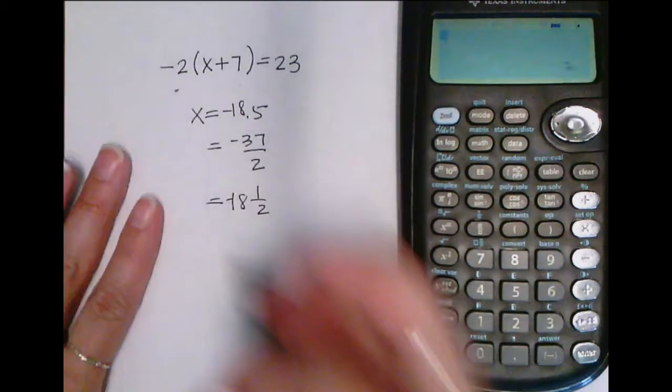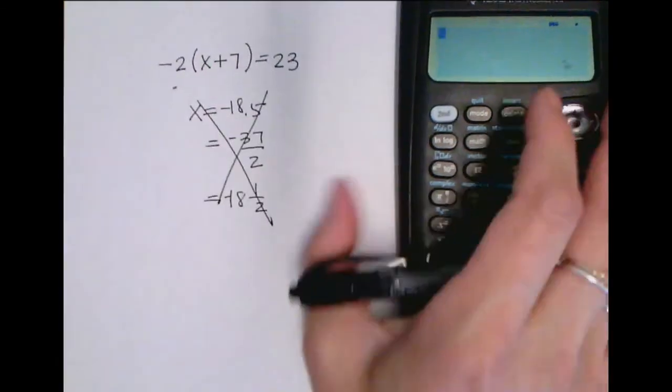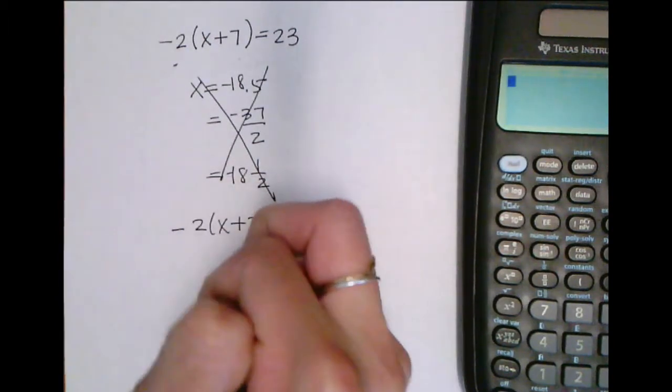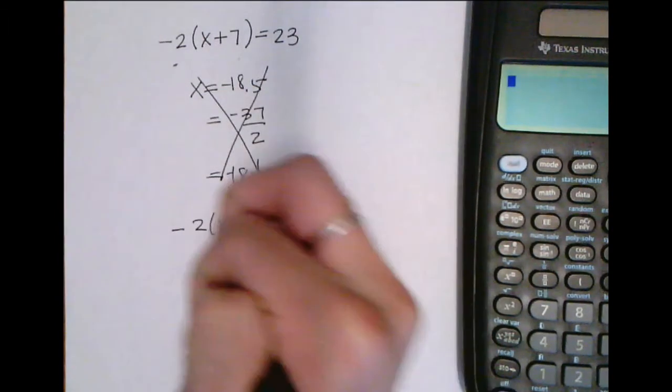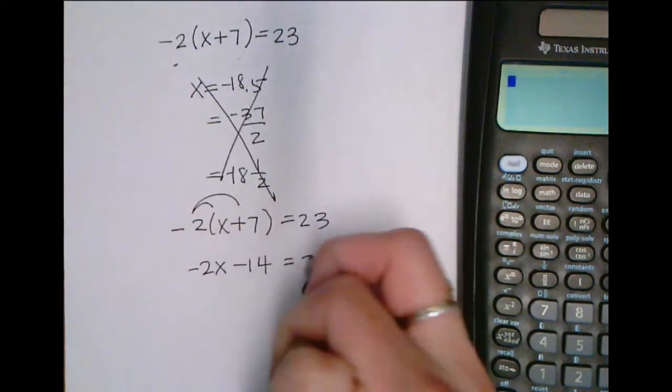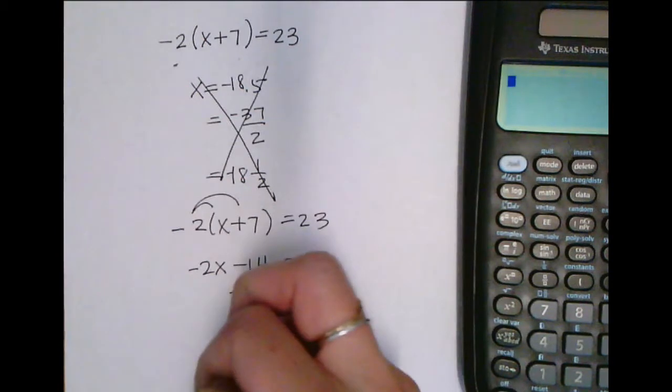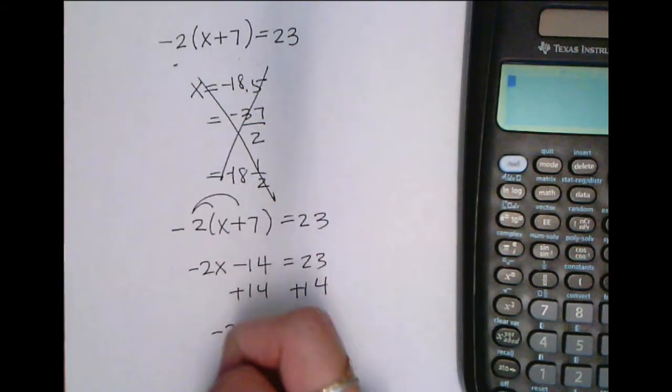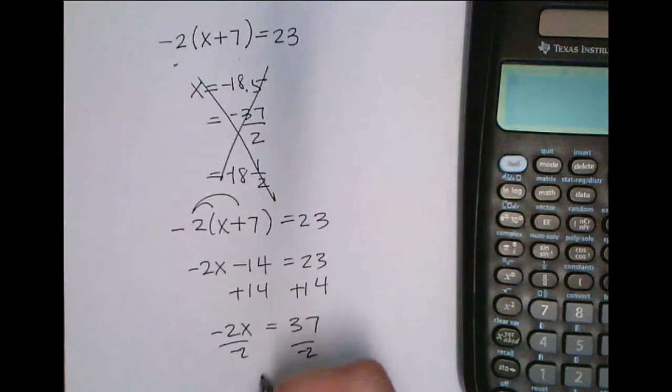What I really recommend doing, since you're going to have to show your work anyways, is to take this, solve it the traditional ways that we've talked about in class. Right, so we're going to add that. We get negative 2x is equal to 37. Get rid of that negative 2 by dividing it because it was multiplied.